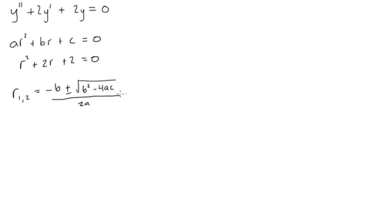So this is going to be equal to negative b, we'll have negative 2 plus or minus square root of b squared, we'll have 4 minus 4 times 1 times 2. Okay, this is all over 2 times a, so this is all over 2.